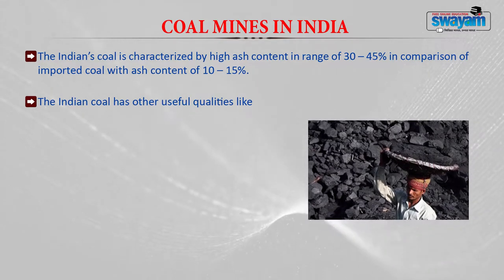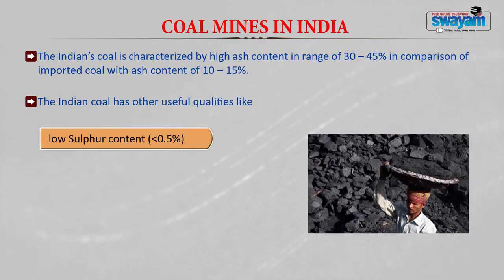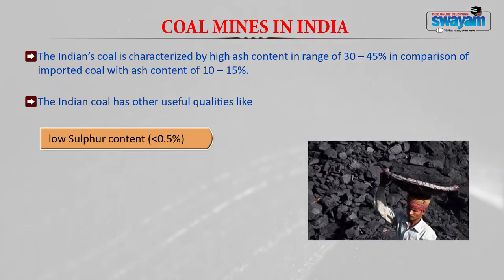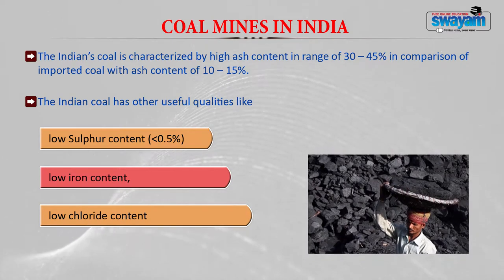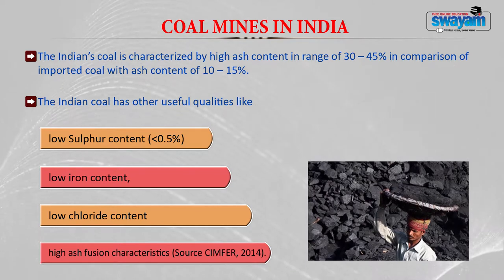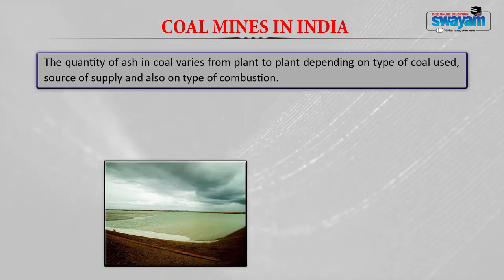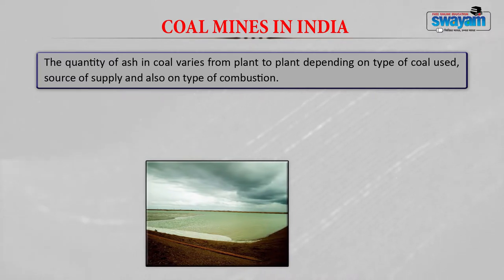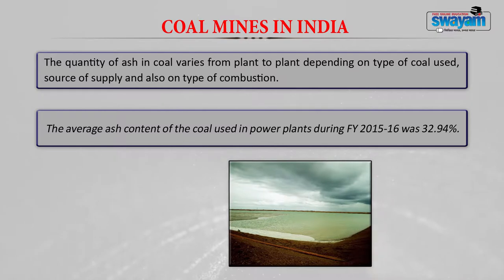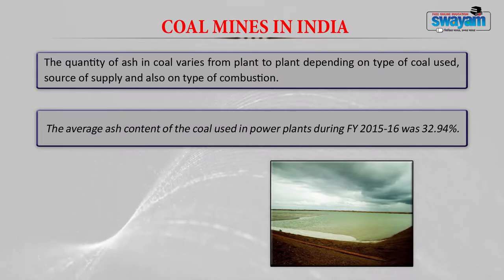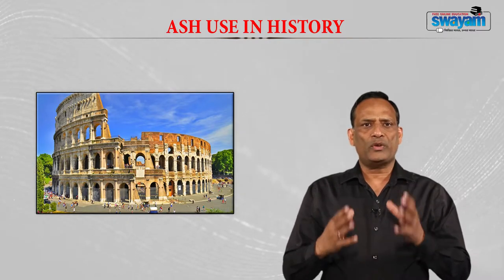Indian coal has several useful characteristics. It has low sulfur content — less than 0.5 percent — which means lesser sulfur dioxide gas is produced. Indian coal also has low iron content, low chloride content, and high ash fusion characteristics. The quantity of ash in coal varies from plant to plant depending on the type of coal used, source of supply, and type of combustion. The average ash content of coal used in thermal power plants in financial year 2015-16 was 32.94 percent.